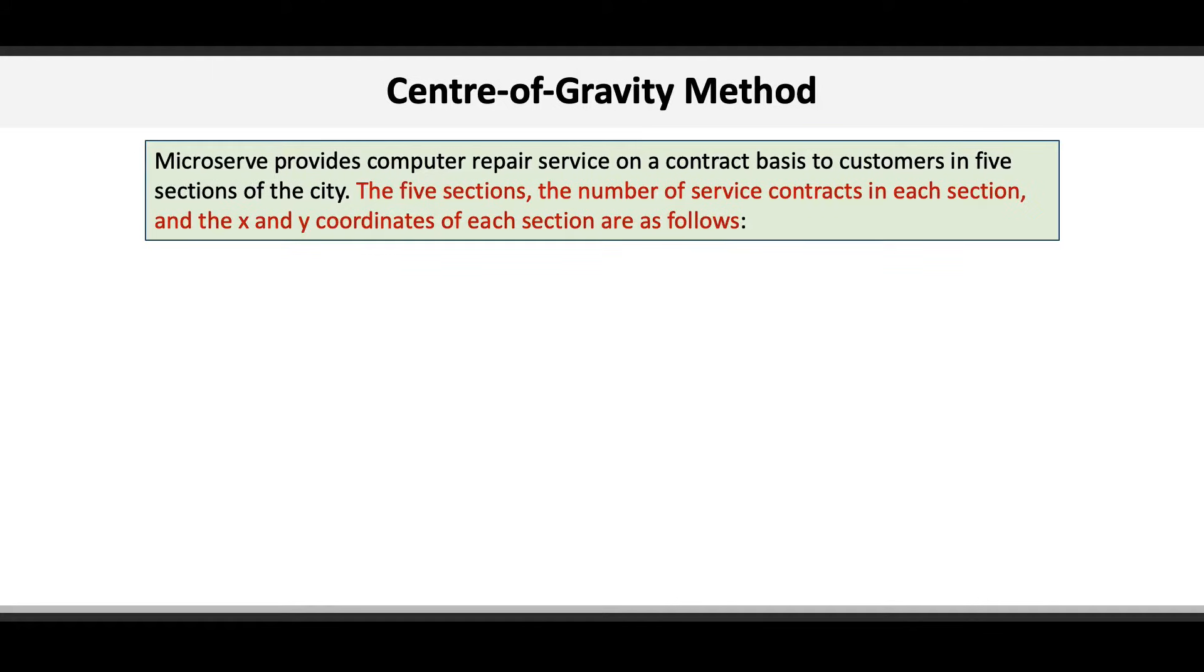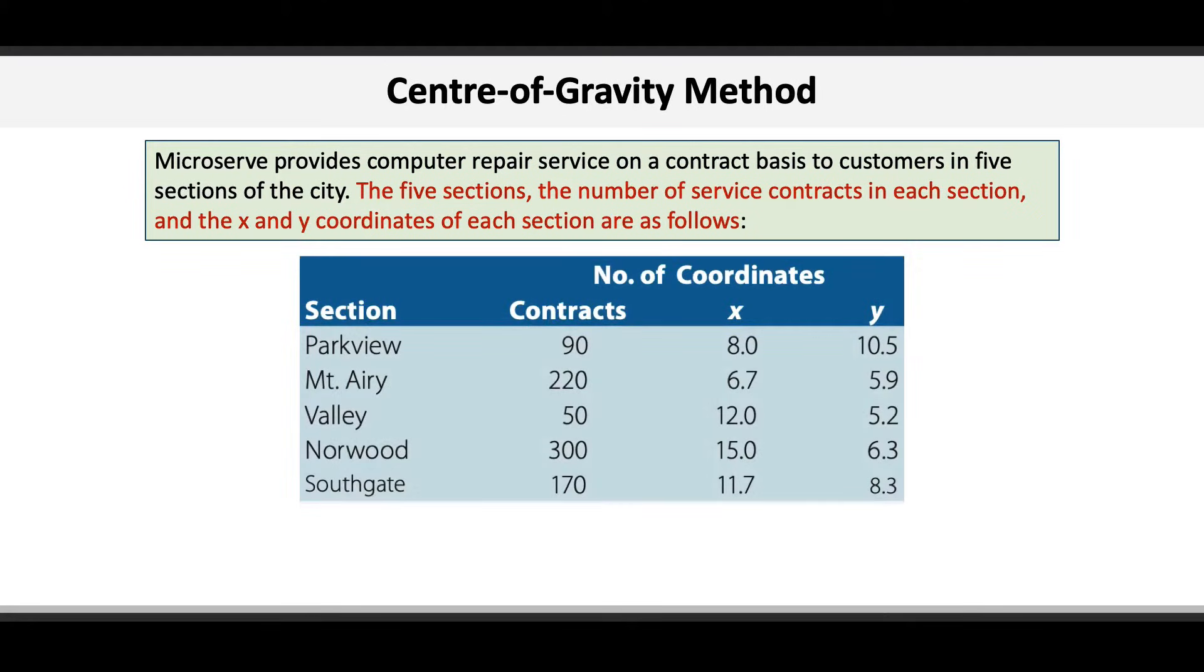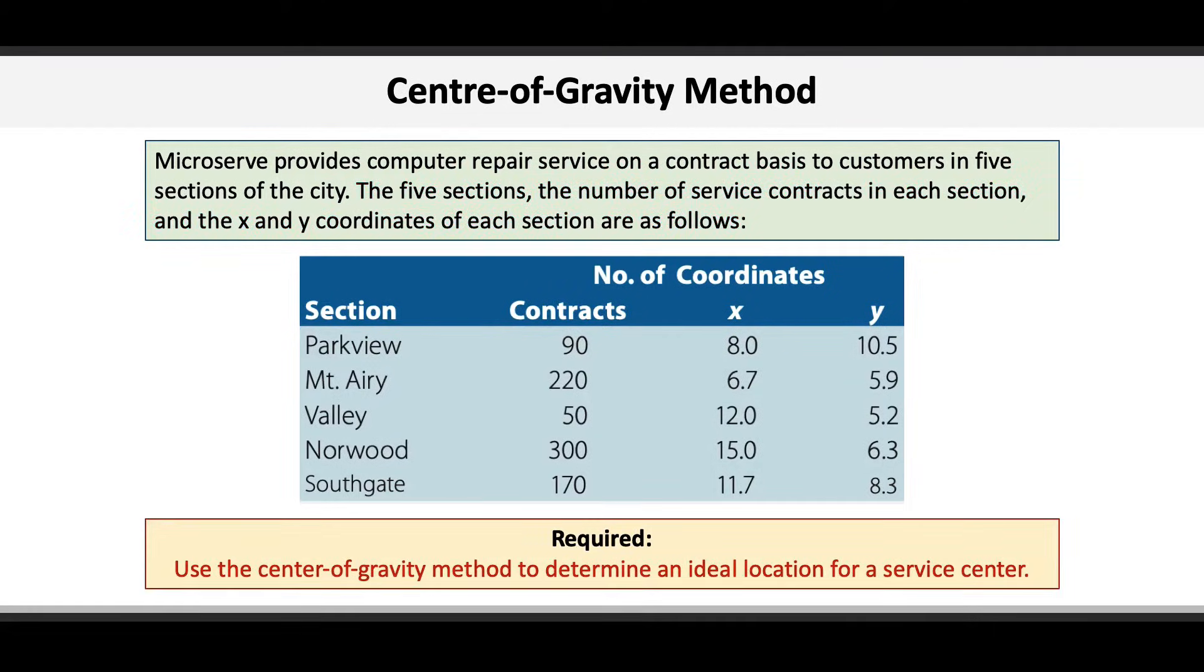Microserve provides computer repair services on a contract basis to customers in five sections of the city. The five sections, the number of service contracts, and the x and y coordinates of each section are shown in the table below. The requirement is simple: Use the center of gravity method to determine an ideal location for a service center.